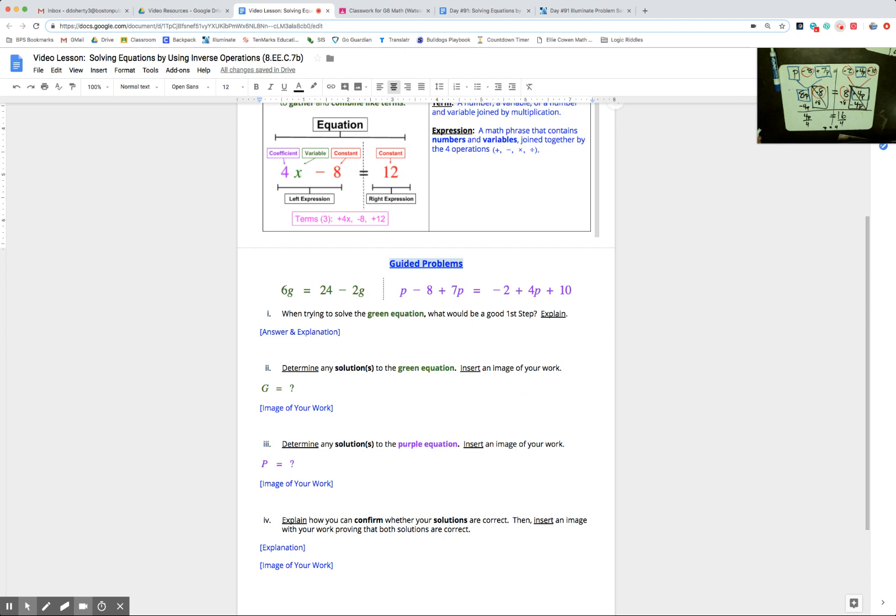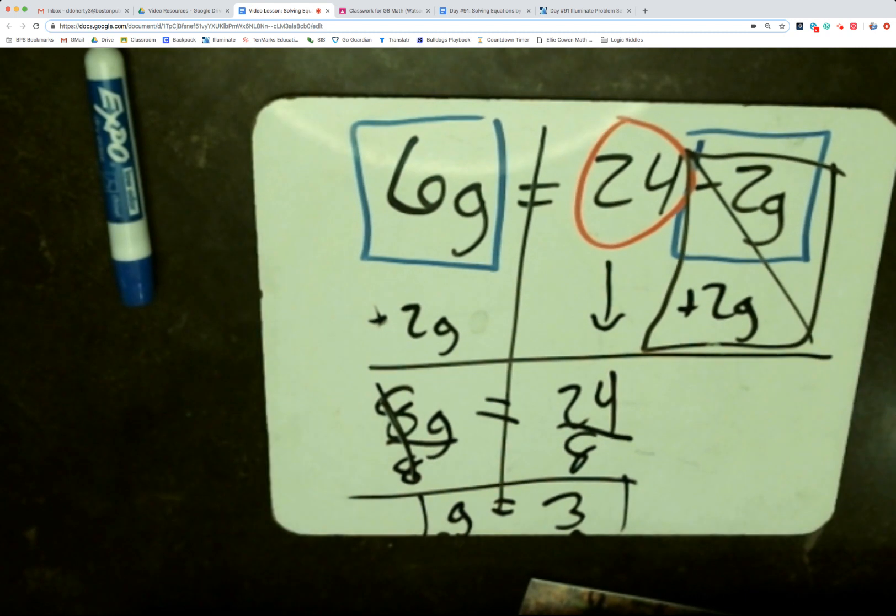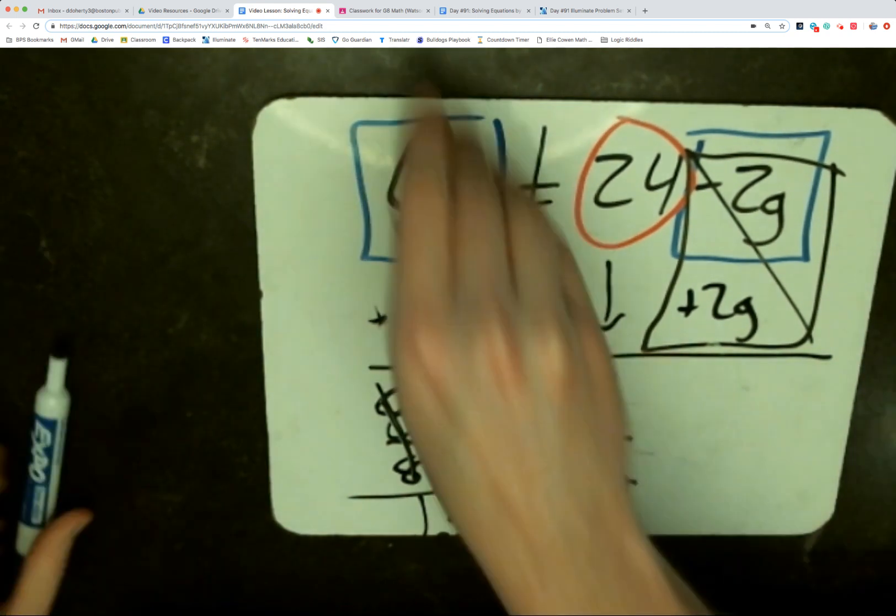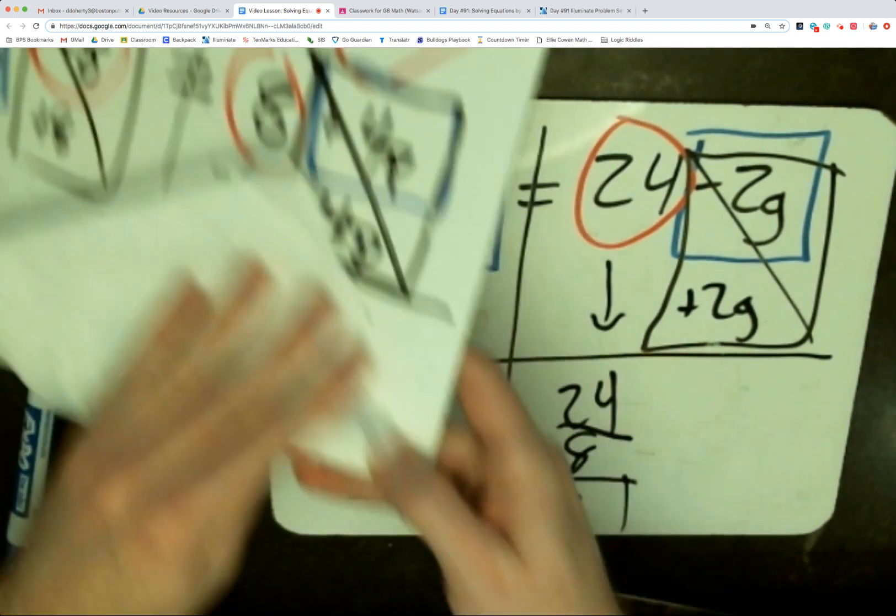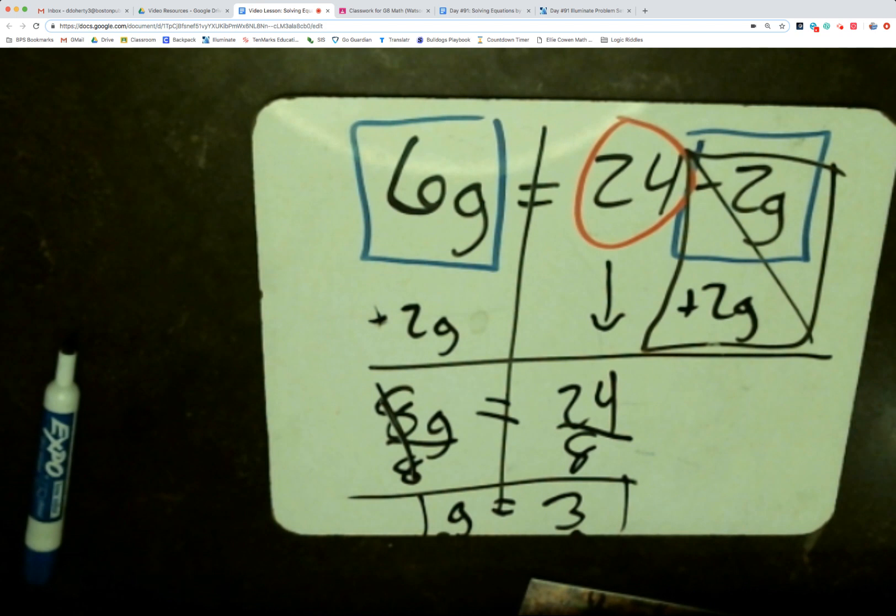The last part says explain how you can confirm whether your solutions are correct. Then insert an image with your work proving it. How do we do that? I'm going to take a look and show you one example. You're going to have to do the more complicated one on your own. We're going to take a look at 6g equals 24 minus 2g, and we thought the answer was g equals 3. So the way that we're going to check whether g equals 3, we call this substitution. So your answer for part 4 on guided practice: you use substitution to confirm your answer is correct.